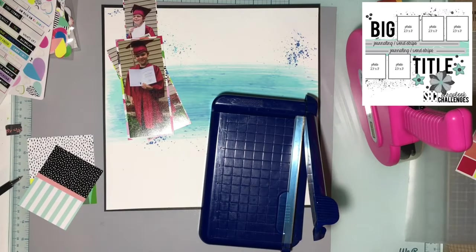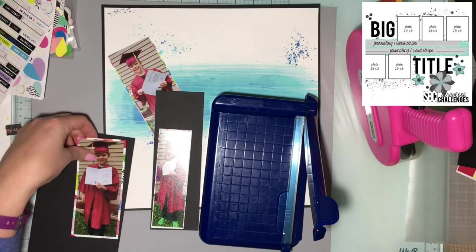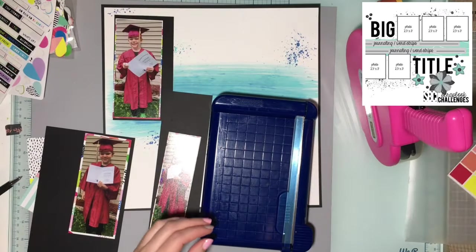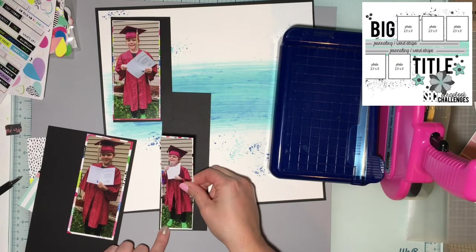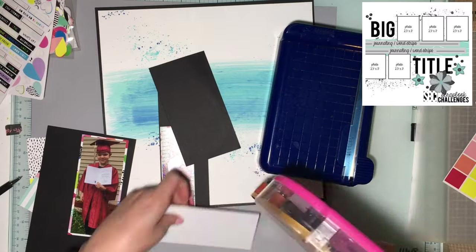I got my colors from the photo that had the big circles, matted one photo in that, and I'm going to mat the two other photos in those patterns to have some color behind them. Then I'm going to mat them in black as well.